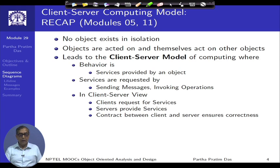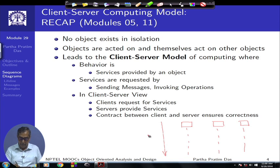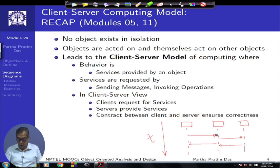Before we get started on what a sequence diagram is, I would like to remind you of the basic computing model. We have been talking about the structural aspect of it, but now we want to talk about the behavior or execution aspect. In the final model of our computation we have several objects existing in the system, and they exchange messages between themselves — one object may send a message to another object, receive a message, and when you get a message you perform certain computation associated with the particular operation requested through that message.